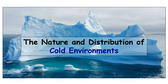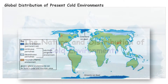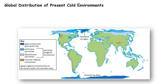The nature and distribution of cold environments. If we have a look at the world today, cold environments include the polar areas. These are areas of permanent ice, such as the Greenland ice sheet and the Antarctic ice sheet.